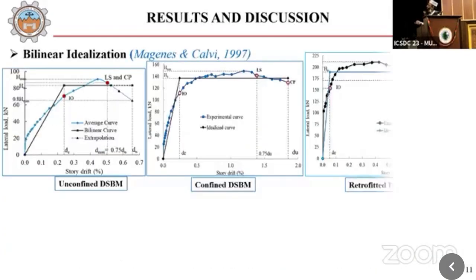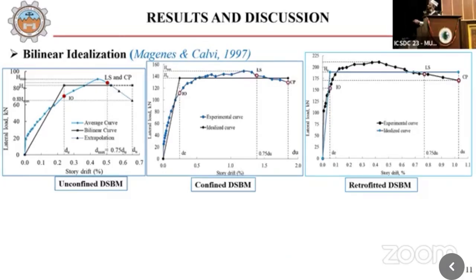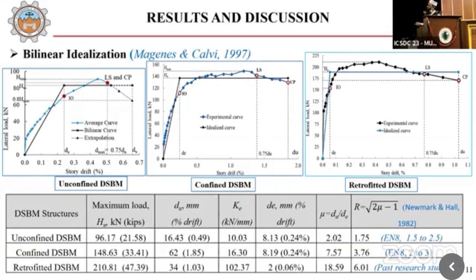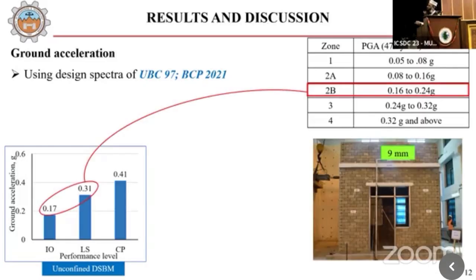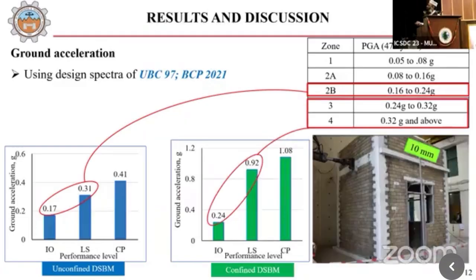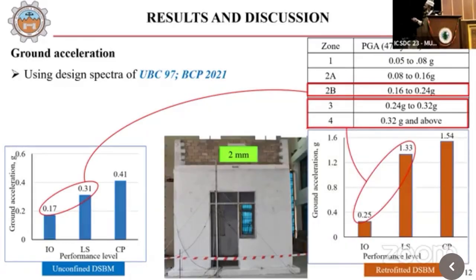We tested this for lateral loading and cyclic loading. Here you can see the load-carrying capacity on the y-axis — the lateral load-carrying capacity is increasing tremendously. The maximum load-carrying capacity is increasing, the effective stiffness is increasing, the ductility is increasing, and the response modification factor is also increasing tremendously. For dry stack unconfined masonry, this can be used in seismic Zone 2B. The confined version can be used in Zones 3 and 4, and with ferrocement overlay, it can be used in all zones including the higher seismic Zones 3 and 4.